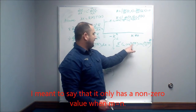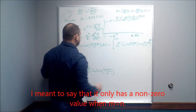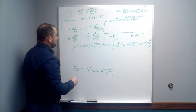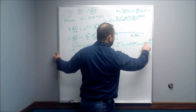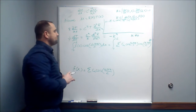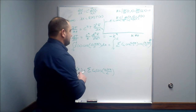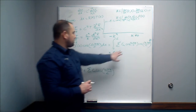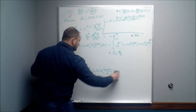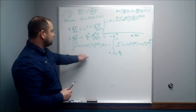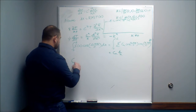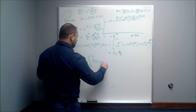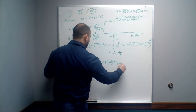Since the integral is zero unless n equals m, the summation collapses. Integrating cos²(nπx/L) from 0 to L gives L/2, so we get cₙ·(L/2) on the right side. Rearranging to solve for cₙ, we get cₙ = (2/L)·∫₀ᴸ f(x)·cos(nπx/L) dx. This is valid for all values of n except n = 0.